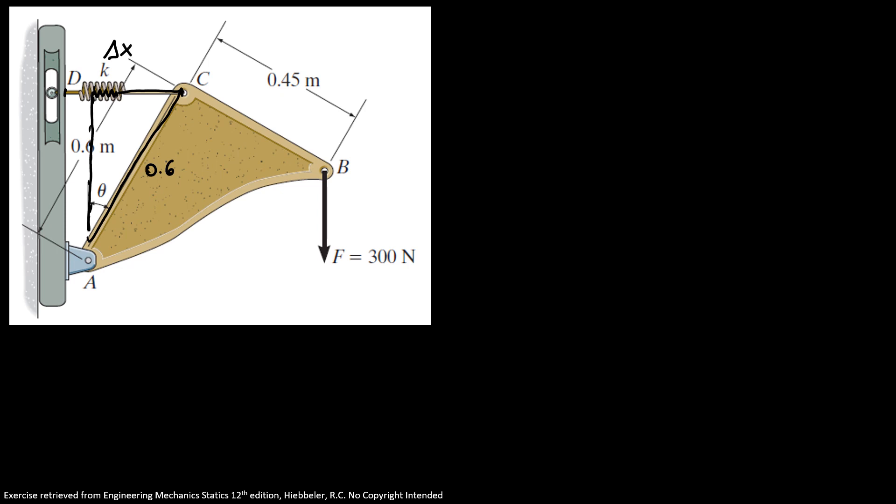We know that delta x divided by 0.6 equals sine of 30 degrees. So our delta x equals 0.3 meters. So the spring is stretched 0.3 meters from its original position.